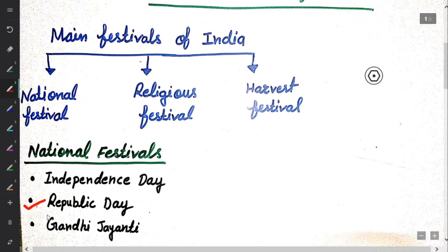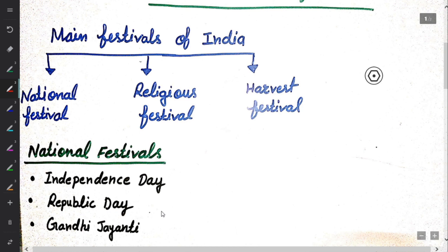Second is Republic Day. Republic Day is celebrated on 26th January. On this day, a grand parade is held at Rajpath in New Delhi. The armed forces, police, and school children participate in the parade.